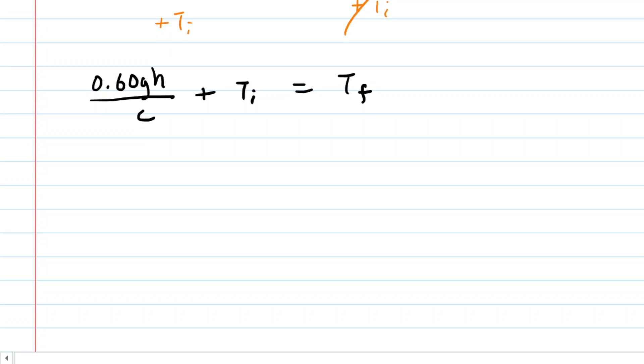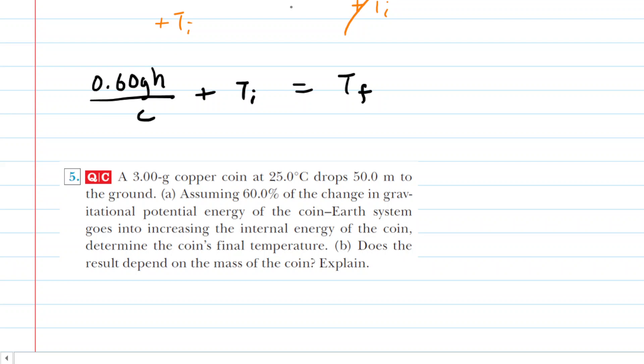At this stage, we're ready to plug in the known values. Looking at the question again, the height was 50 meters and the initial temperature was 25 degrees Celsius.